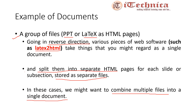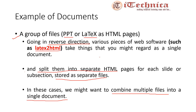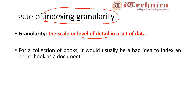Now, suppose we have these documents — for simplicity, let us take a file document. How long should this document be for indexing purposes? This is our next consideration, because it relates to a very important issue in information retrieval called indexing granularity. Granularity is nothing but the scale or level of detail in a set of data. For a collection of books, it would usually be a bad idea to index an entire book as a single document.